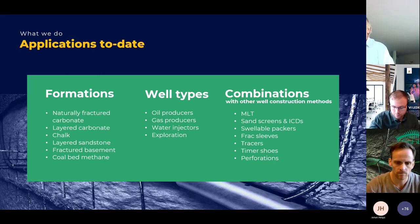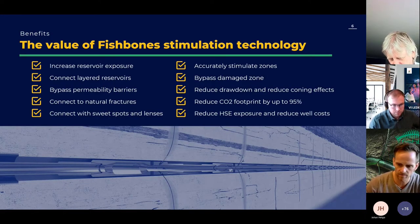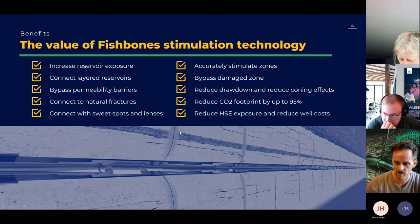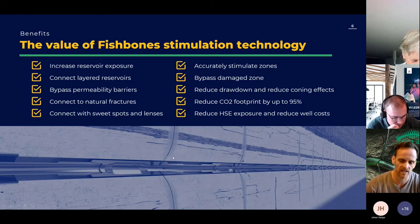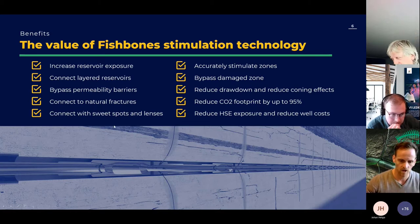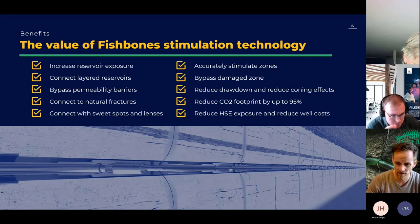The biggest benefit is in slightly to highly deviated and horizontal wells, because the needles increase vertical permeability, which is normally much lower than horizontal permeability. An important thing to understand: we don't increase the surface area much by pumping out 200 to 300 needles — the holes are small. Connectivity is the key — we connect to the reservoir and increase the radius, but we don't increase the contact area. If you need contact area, you need to drill another well or a dual lateral.